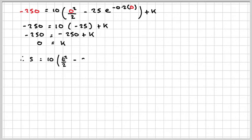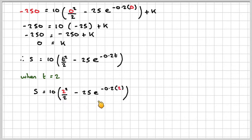So my displacement function is 10 times t squared over 2 minus 25e to the minus 0.2t plus k. And then when t is 2, we're going to have s is equal to 10 times 2 squared over 2 minus 25e to the 0.2 times 2. Get my calculator out, and that will give me minus 147.58, which is minus 148 meters.